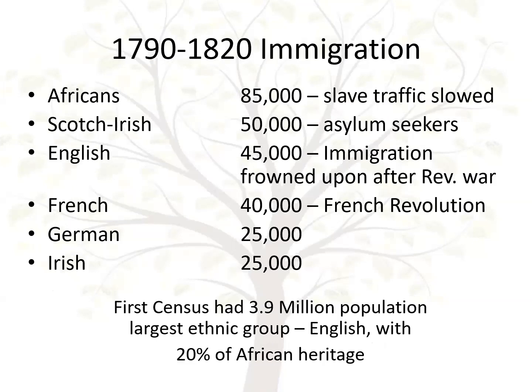The next wave of immigration is 1790 to 1820, showing the locations people came from — all Western Europe, primarily the British Isles. The first census in 1790 had about 3.9 million, with the largest ethnic group being English, but also 20% with African heritage. As Thomas Paine noted in 1790 after the first census, the United States was becoming the asylum for persecuted lovers of civil and religious liberty from every part of Europe. In his pamphlet Common Sense, he noted that Europe — not England — was the parent country of America.